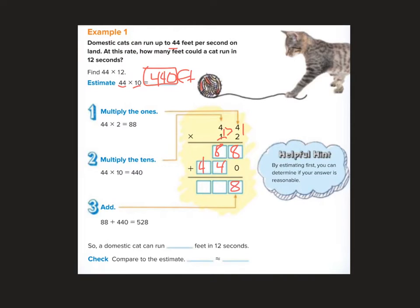So then I'm going to add them together. 8 plus 0 is 8, 8 plus 4 is 12, 1 plus 4 is 5. So we get 528 feet. Okay, so a domestic cat can run about 528 feet in 12 seconds. So is that close to 440? Yes, kind of.